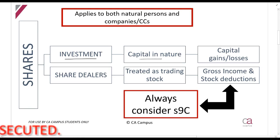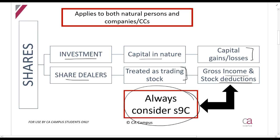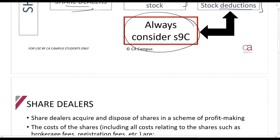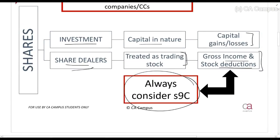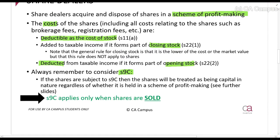If you're a share dealer, shares are treated as trading stock — when you buy it will be a deduction and when you sell it will be gross income. Each year the opening stock will be deducted and the closing stock will be added back to income. Section 9C only applies to share dealers, meaning people who have shares as gross income. If a share dealer buys and sells shares in the scheme of profit-making, the costs of the shares are deductible as the cost of stock.